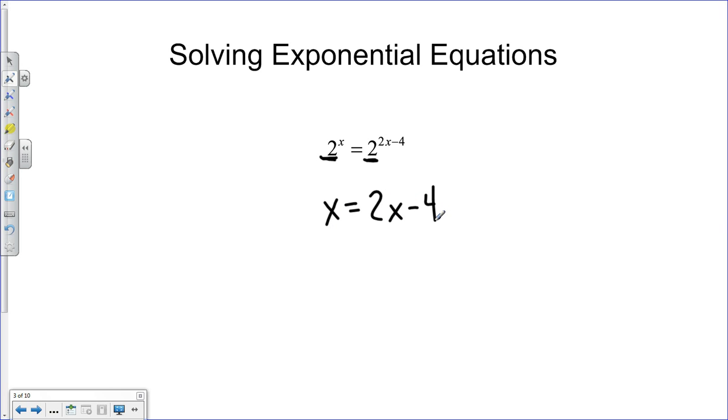So this isn't that bad of an example because the base number is exactly the same on both sides. When the base number is exactly the same on both sides, just set the powers equal. I finish off by solving for x, so I'll subtract 2x over. I get negative x equals negative 4, so that means x equals 4. And there's my solution.